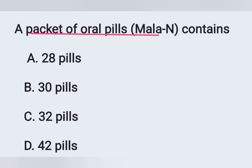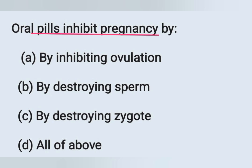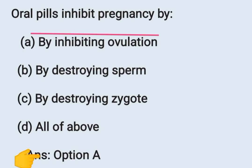Next question: A pack of the oral pill Mala-N contains — Option A: 28 pills, Option B: 30 pills, Option C: 32 pills, Option D: 42 pills. It contains 28 pills — a package of 21 oral contraceptive pills and seven brown film-coated ferrous fumarate tablets. The correct answer is Option A: 28 pills. Next question: Oral pills inhibit pregnancy by — Option A: inhibiting ovulation, Option B: destroying sperm, Option C: destroying the ovum, Option D: all of these. The correct answer is Option A: inhibiting ovulation.